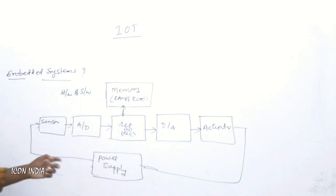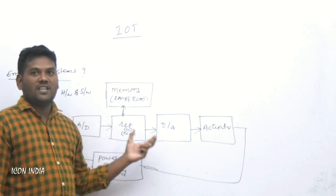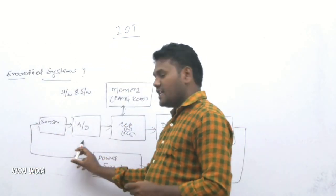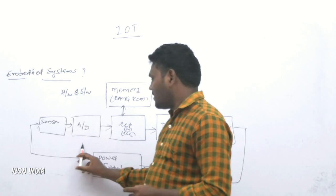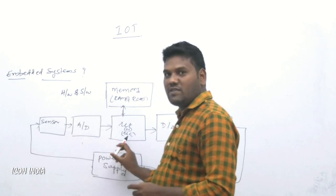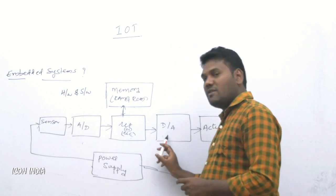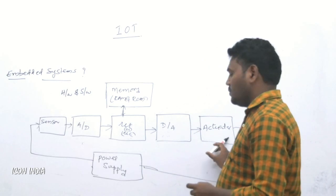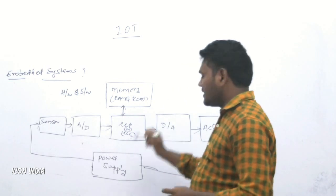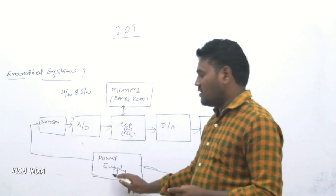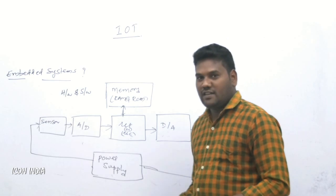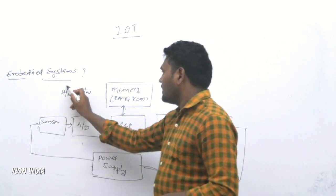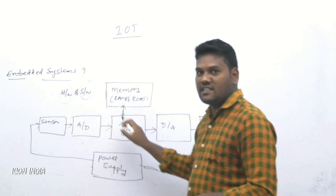In this block diagram, it consists of hardware and software components. The hardware components are: sensor, A-to-D converter (analog to digital converter), microprocessor or microcontroller, D-to-A converter (digital to analog converter), and actuator as the output. All those components work on the power supply — without power supply, your device will not work properly. The power supply is connected to all those devices.